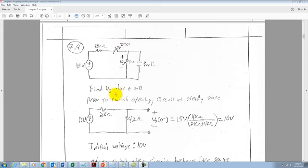And you're asked to find VO for T greater than 0. So what we want to do is first determine prior to that switch opening, what is our initial condition for VO?